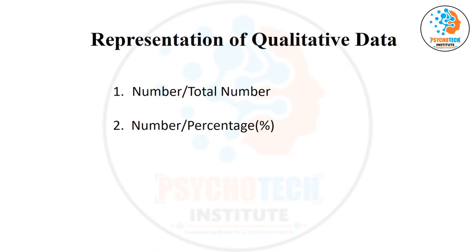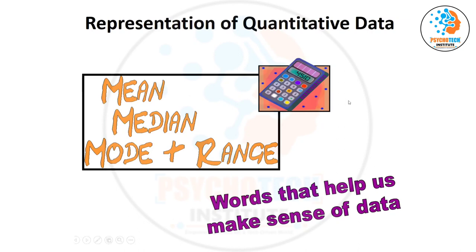Whenever you have a qualitative variable, present it with number and percentage — not just percentage alone, and not just number. In any paper, always use number with percentage. For quantitative variables, we use mean, median, or mode. Like the percentage marks you obtained is essentially the average. Mode is rarely presented directly, but there are various measures depending on the situation.